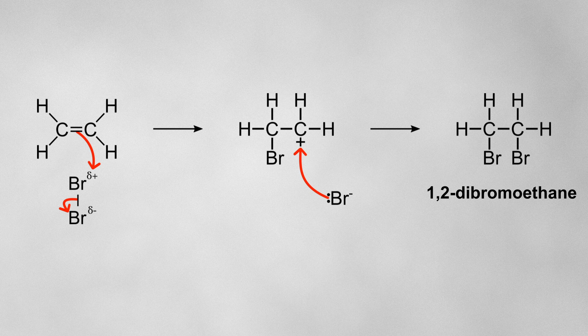This will leave us with 1,2-dibromoethane. Overall, two bromine atoms have added to the alkene to leave a haloalkane. The two molecules which reacted here are symmetrical, so there's only one possible product.